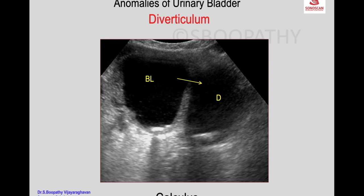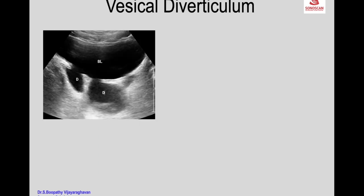The diverticulum may be associated with calculi. On transverse scan, a calculus is seen within the bladder and also within the diverticulum at its communication. There may also be hematuria as a result of bleeding in the diverticulum.